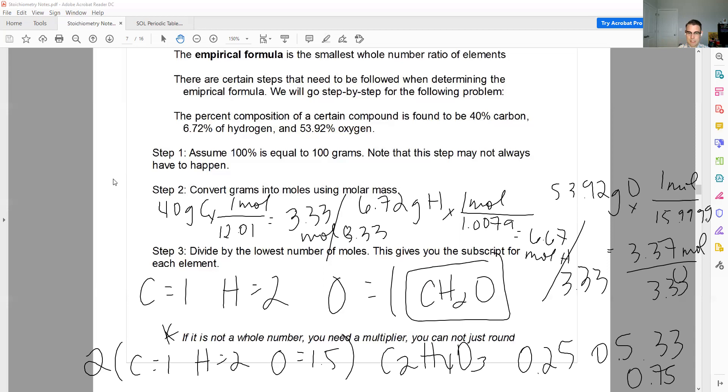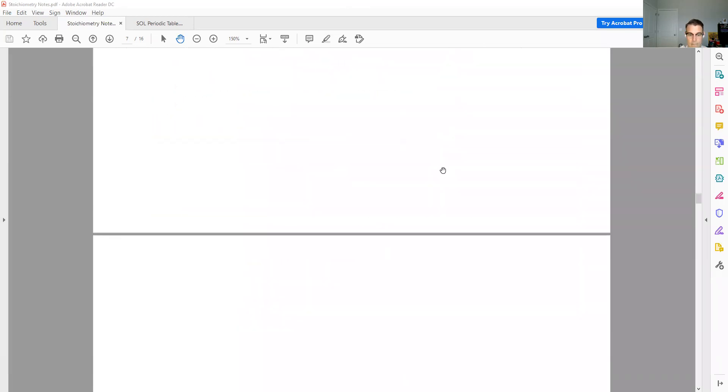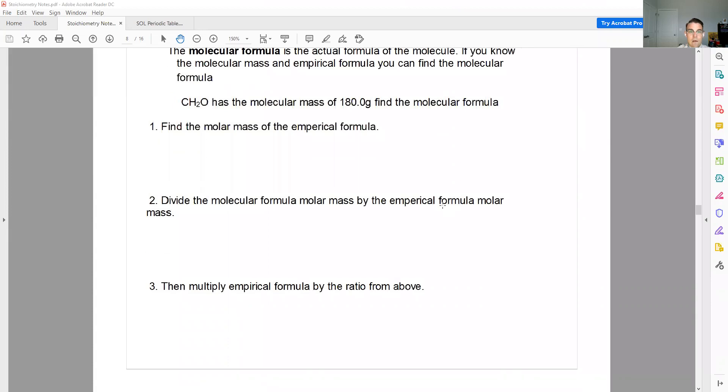And that's how you find an empirical formula. Step 1, assume 100% is 100 grams. Step 2, take grams, turn them into moles. Step 3, divide by the lowest number of moles. I guess a step 4 would be write what you have. Those are your subscripts. That's your formula. And then your caveat would be if it's not a whole number, you need a multiplier.